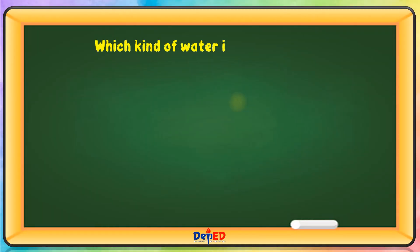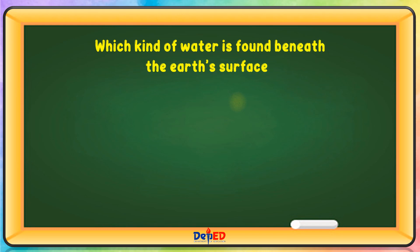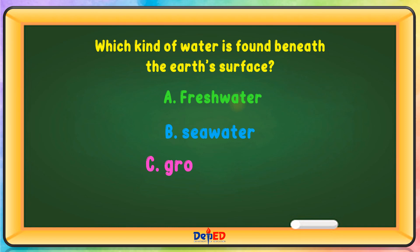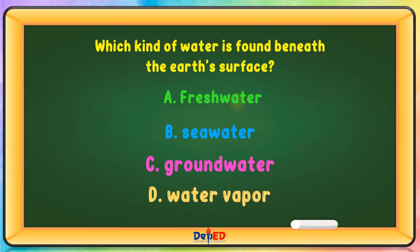Which kind of water is found beneath the Earth's surface? A. Fresh water. B. Sea water. C. Ground water. D. Water vapor. The answer is letter C.